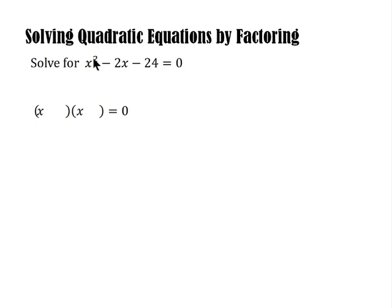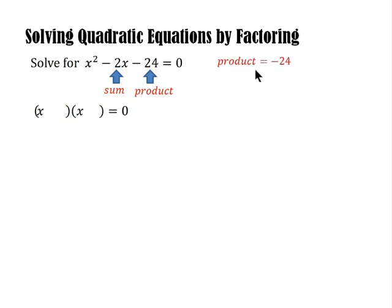The factors of x squared are x and x, since x times x equals x squared. Here's the technique: the product is negative 24 and the sum is negative 2. So we need to find two numbers such that when you multiply them the product is negative 24, and when you add them the sum is negative 2.